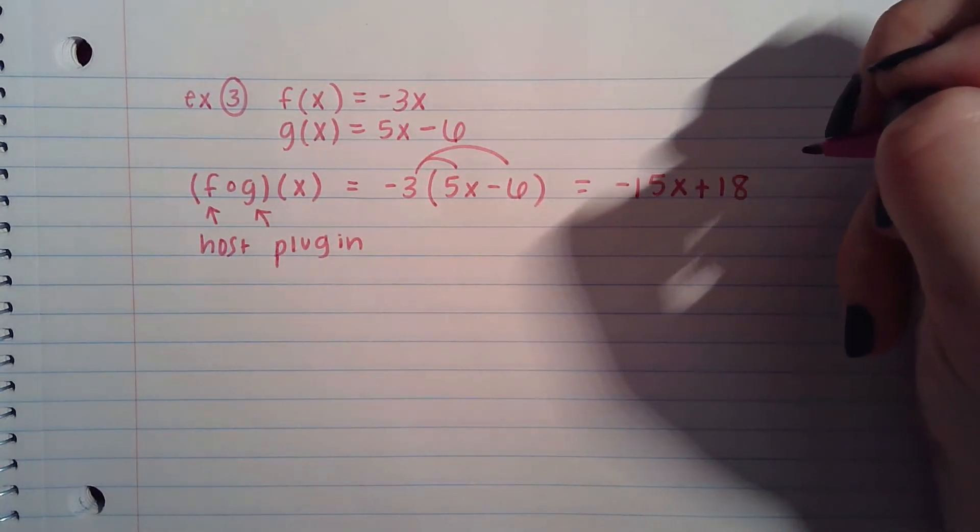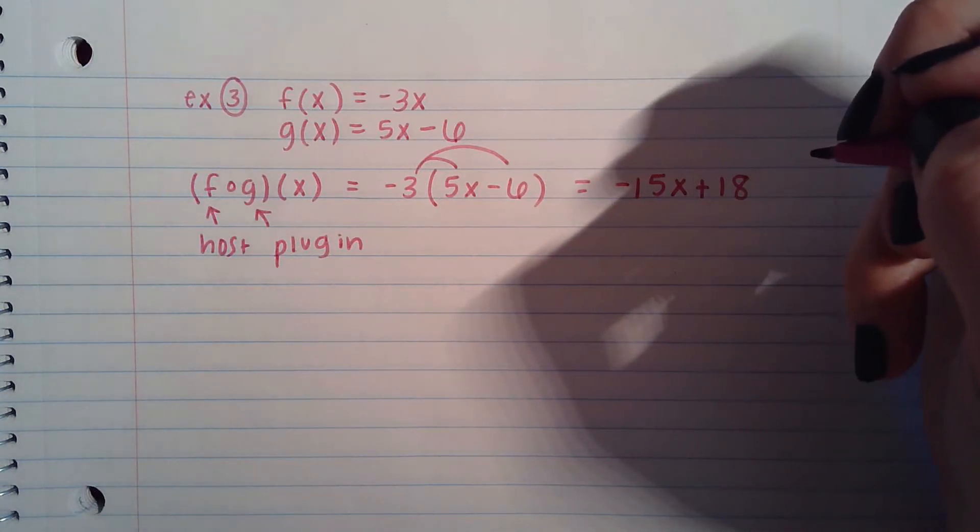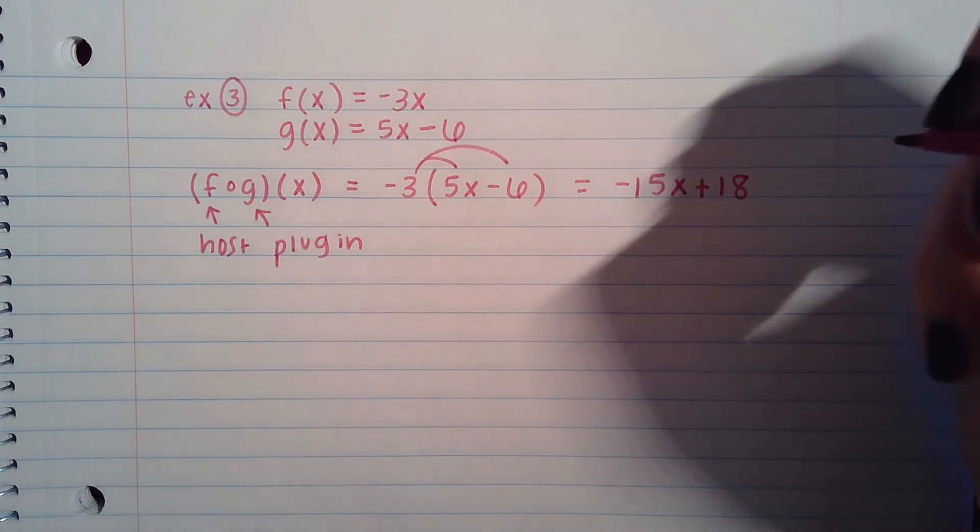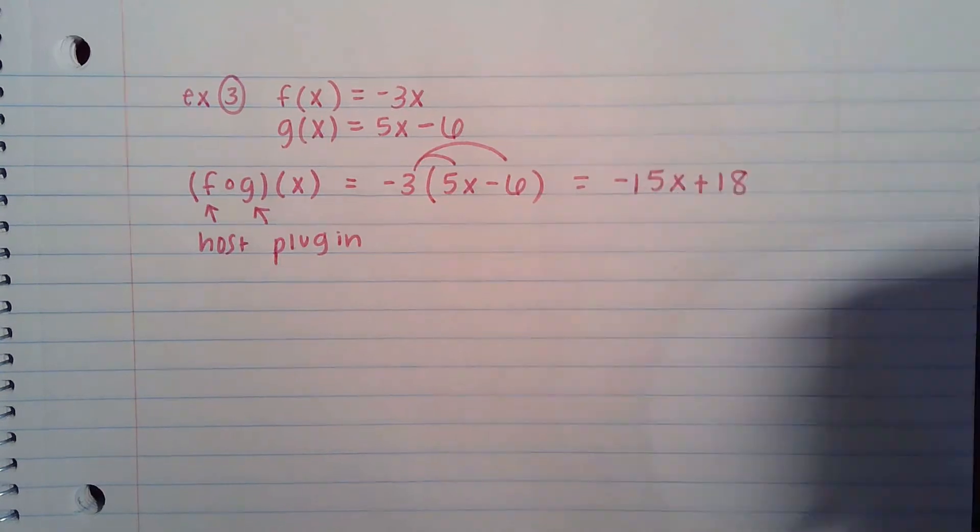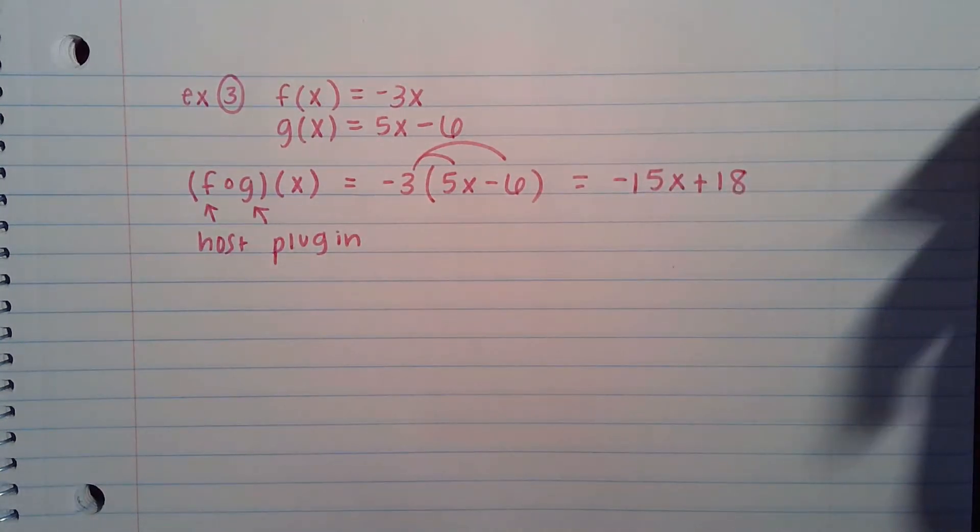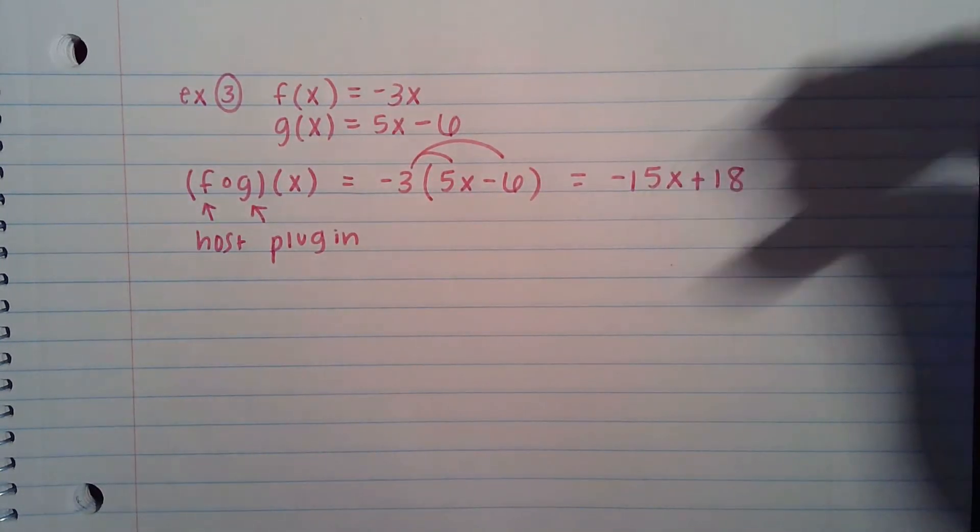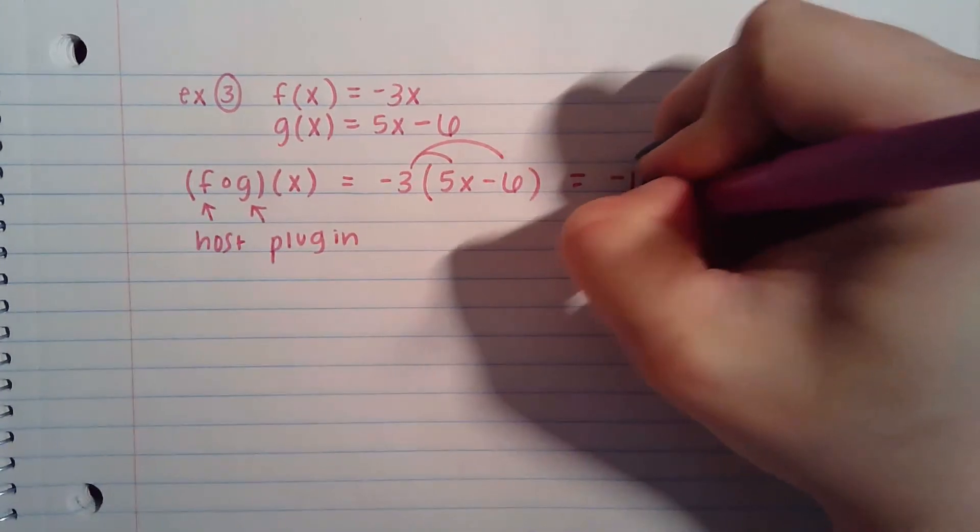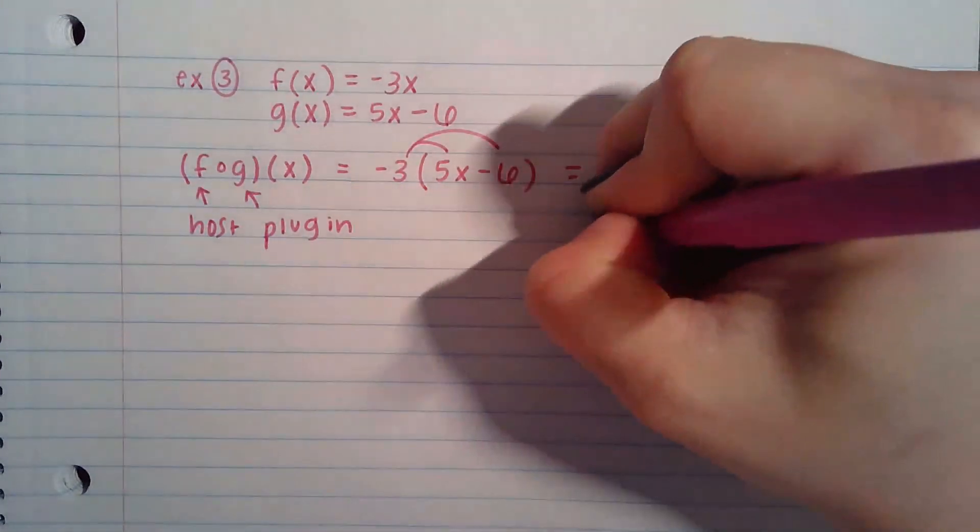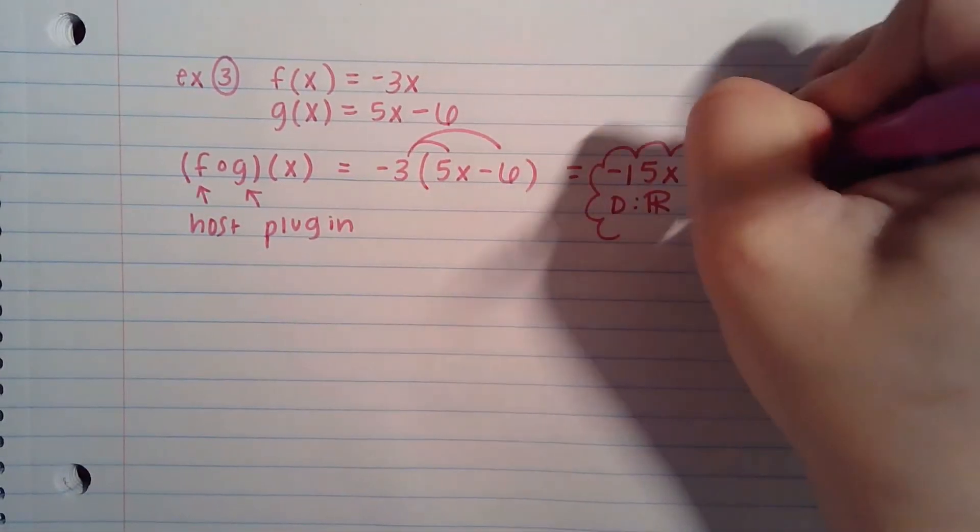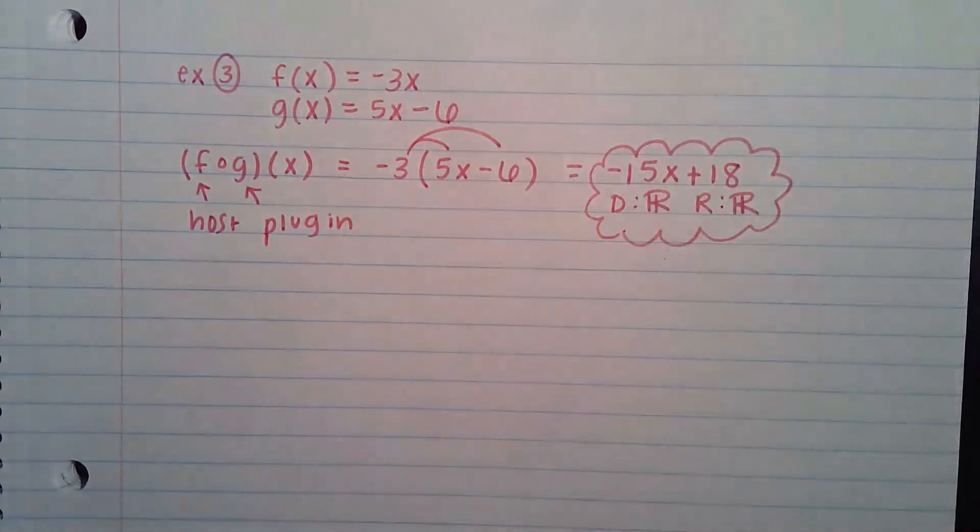In this problem, we would also want to denote domain and range. So we would look to see what type of equation this is, like what type of graph would this make, and what would be the domain and range as a result. This would just be a line. Lines are always domain all real numbers and range all real numbers.